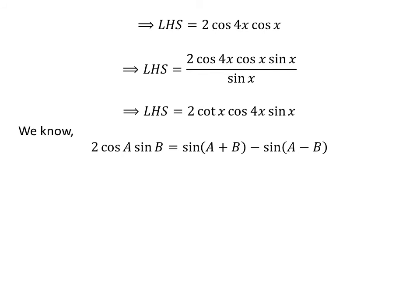We know the famous trigonometry identity: 2 times cosine of A times sine of B equals sine of (A plus B) minus sine of (A minus B). The proof of this identity is given in the video appearing in the upper right corner, and the link is also given in the description section.